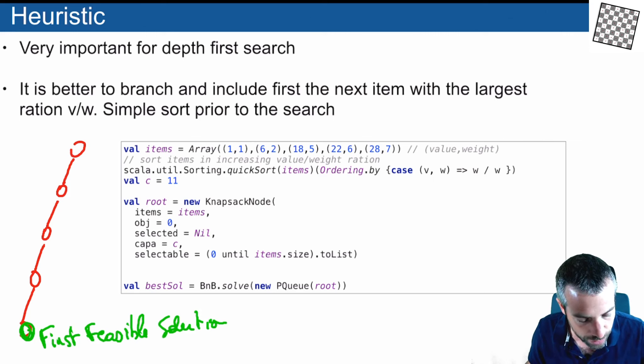It's always good to select first the good solutions on the left. A good idea to do that is to rank all the items according to the ratio value over weight. You will rank them, and so the first thing that we do is always branch first on the item with the higher value over weight, and you put that decision to the left. This way, the first feasible solution that we'll find will be hopefully a good one.